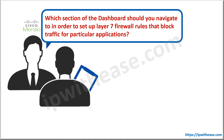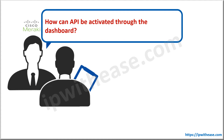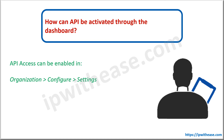Which section of the dashboard should you navigate to in order to set up layer 7 firewall rules that block traffic for particular applications? You navigate to Security and SD-WAN, then Configure Firewall; or Wireless, then Configure Firewall and Traffic Shaping; or Network-Wide, then Configure and Group Policy.